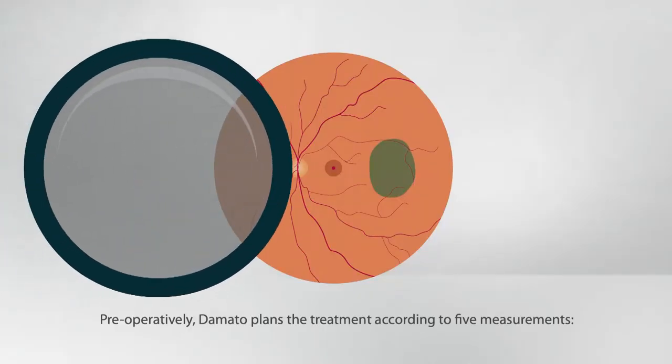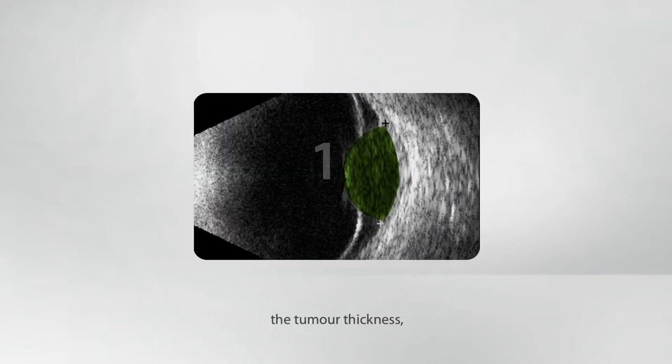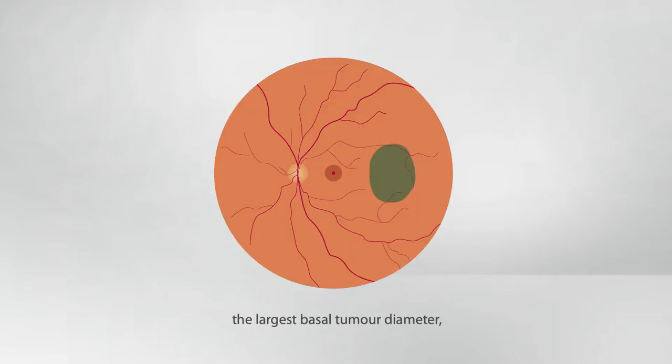Preoperatively, D'Amato plans the treatment according to five measurements: the tumor thickness, the largest basal tumor diameter, the longitudinal basal tumor diameter, the tumor to fovea distance, and the tumor meridian with respect to the fovea.